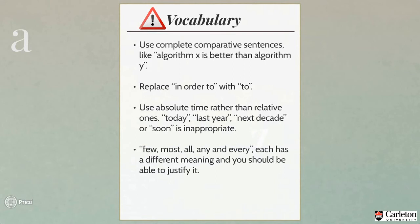The phrase "in order to" can always be replaced with "to." Use absolute time references rather than relative ones — "today," "last year," "next decade," or "soon" are inappropriate. For example, if you are talking about an article written last year, you can say "in 2013." Be careful when using words like "few," "most," "all," "any," and "every" — each has a different meaning, and if you use one, you should be able to justify it.